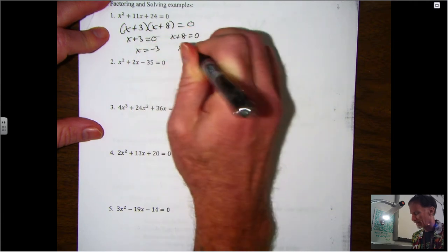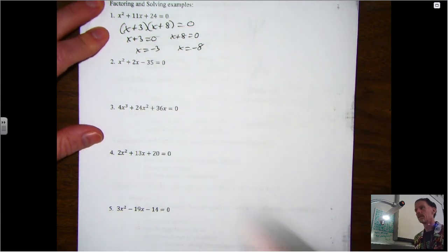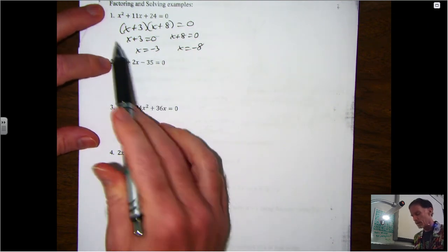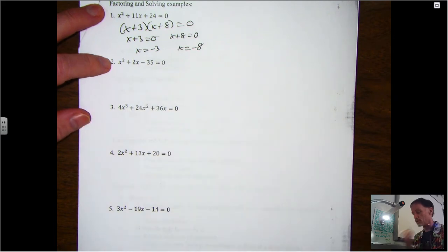And then if you want to take that and actually find the solutions or find the zeros or find the x-intercepts, they're all the same thing. You set each of those factors equal to 0 and you solve it. So in this case, x equals negative 3 and x equals negative 8.